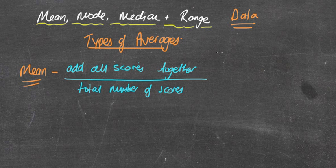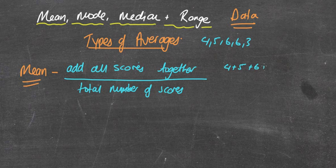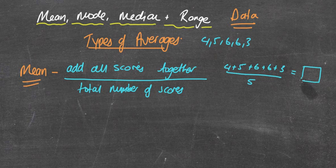We'll have a look at an example. Say there's 4, 5, 6, 6, and 3. So I'd simply do 4 plus 5 plus 6 plus 6 plus 3 and divide by 5 scores. That's the mean, which is often what we'd say as our normal average.